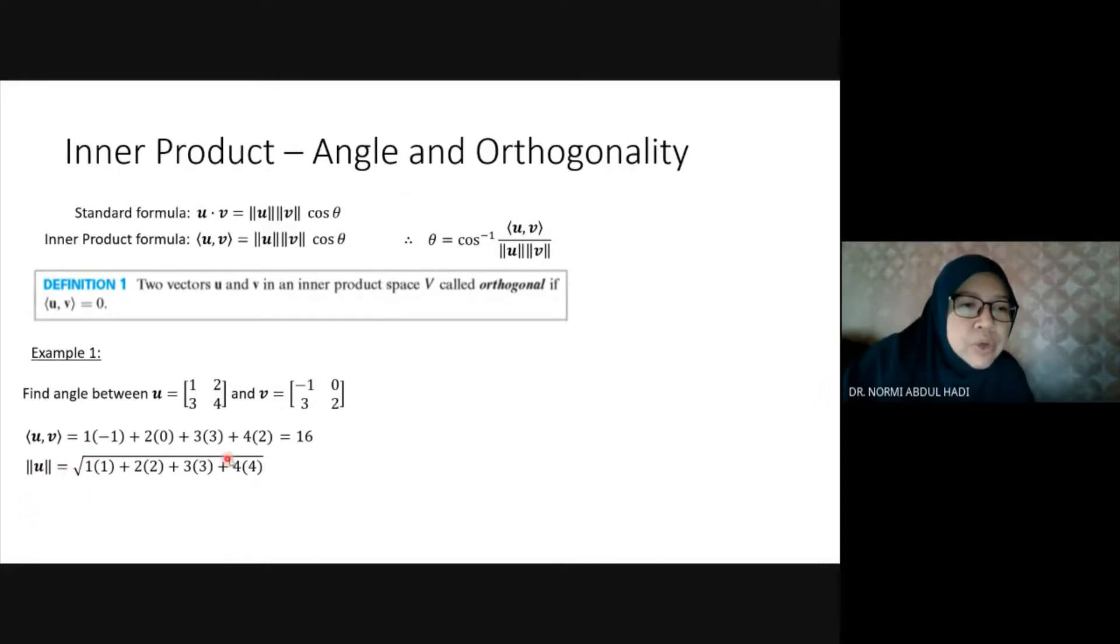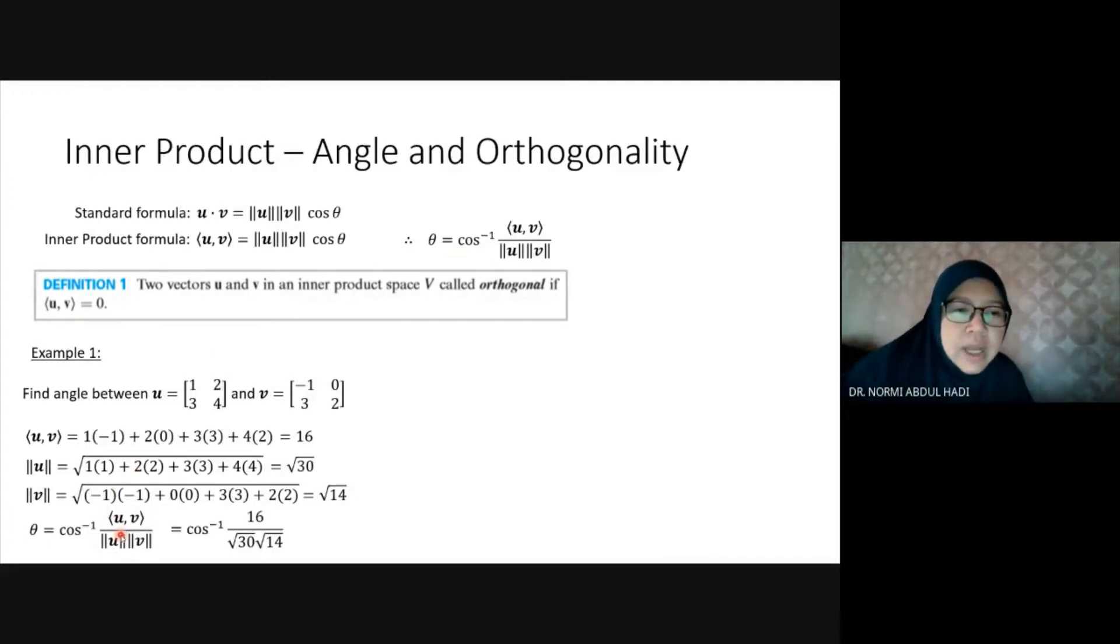The inner product of uu is 29, so magnitude of u is √29. Magnitude of v is √(v·v) = √13. θ = arccos(17/(√29·√13)).